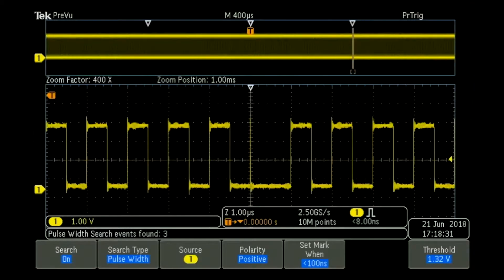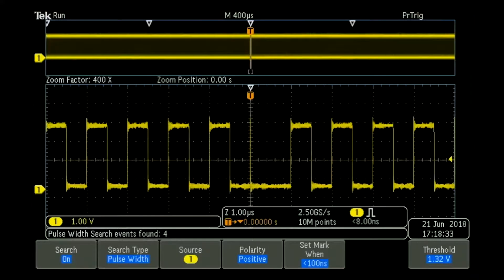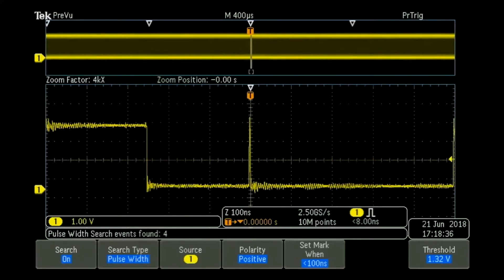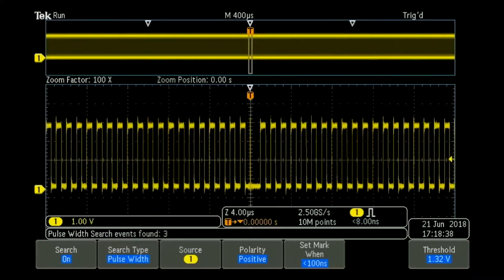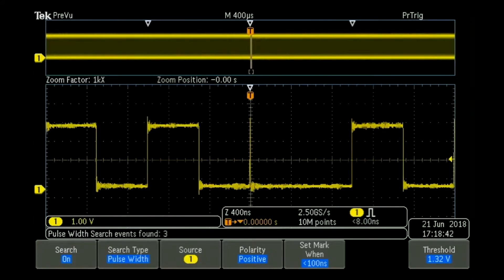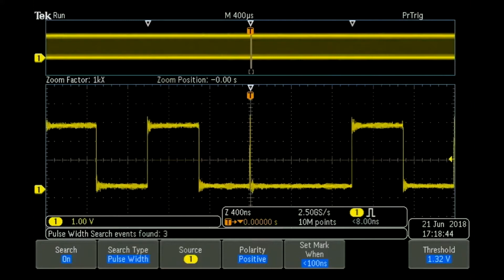We can now use Tex Wave Inspector and the search capabilities to zoom in and then move between those marks. As you can see, pulse width is one of the options for search type triggering. So the combination of this search and zoom capability is one way to investigate these signals.